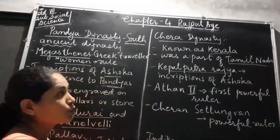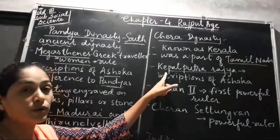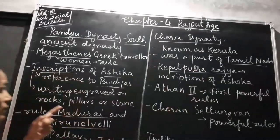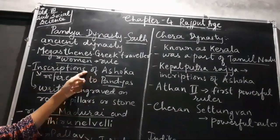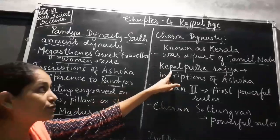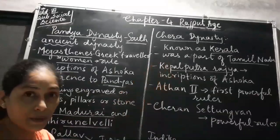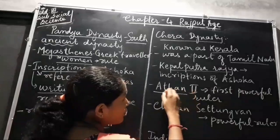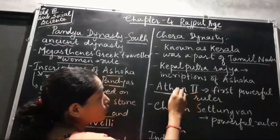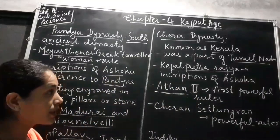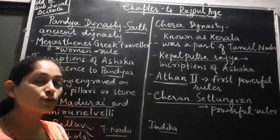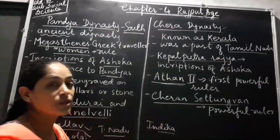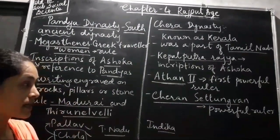Keralputra Rajya — you will find the details about this in the inscription of Ashoka, just as we can find information about the Pandyas in the inscription of Ashoka. There was a first powerful ruler who was Athantu. Other powerful rulers were also there in this dynasty, among which we have Cheran Sethangvar in our textbook.